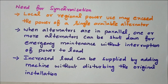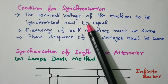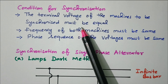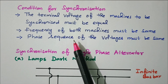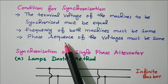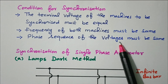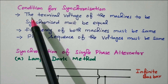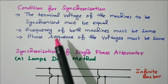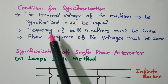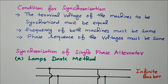The conditions for synchronization: first, the terminal voltage of the machine to be synchronized must be equal to that of the already-connected alternator. Second, the frequency of the machine must be the same. Third, the phase sequence — R, Y, B (red, yellow, blue) — must be the same. These three parameters must be equal before we can synchronize and connect without interruption.